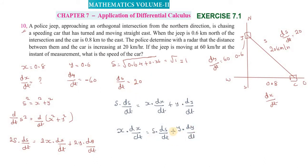Therefore, dx/dt = (1 × 20 - 0.6 × (-60)). 0.6 into -60.